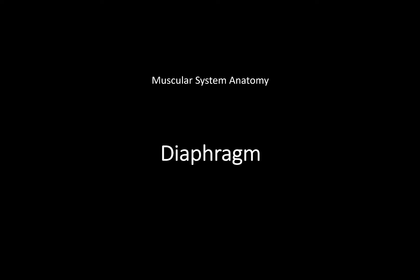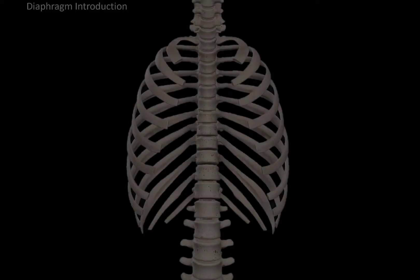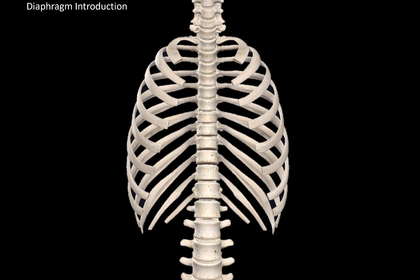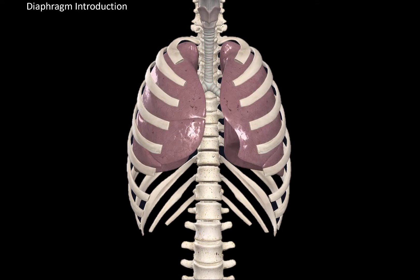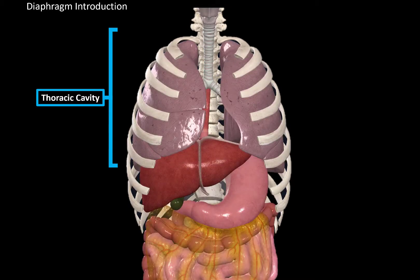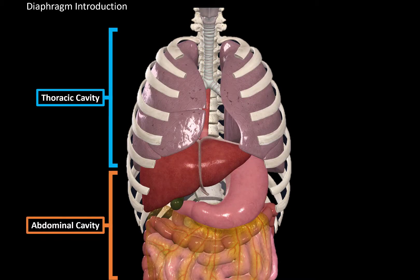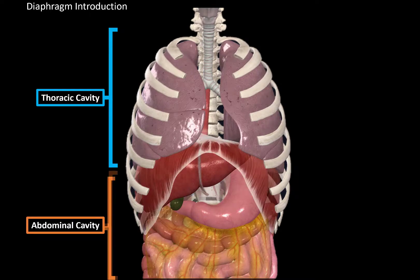What's up, Merite here, and in this video we will be covering the whole anatomy of the diaphragm. Here we see the anterior view of the thorax and the abdomen. The lungs are located within the thoracic cavity, while organs like your liver and intestines are part of the abdominal cavity. Now between the thoracic cavity and the abdominal cavity, there's going to be a large muscle called the diaphragm.